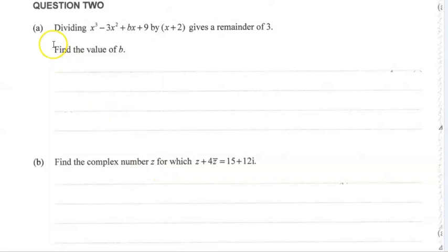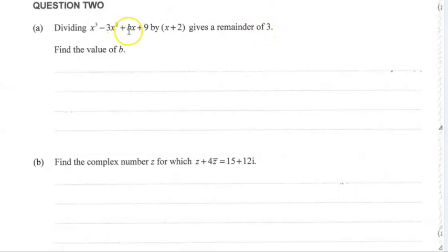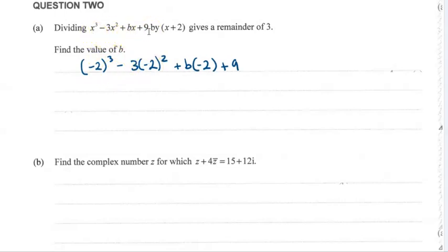Question 2a starts us off nicely with the remainder theorem. If we are told that this is divided by x plus 2, we need to substitute in a value of minus 2 and we will get the answer of 3. We need to work out what b has to be to make that true. Substituting in minus 2 and setting it equal to 3, working through and solving, we get b equals minus 7.